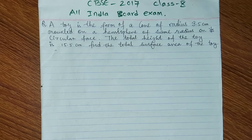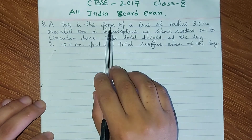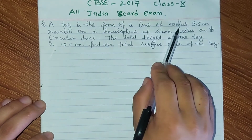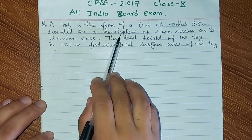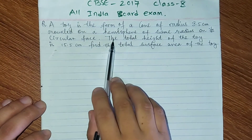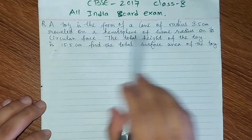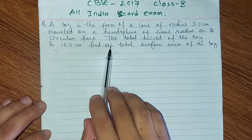This problem is from CBSE 2017 All India Board Exam, Class 10 Mathematics. This question is very important. A toy is in the form of a cone of radius 3.5 cm mounted on a hemisphere of the same radius on its circular face. The total height of the toy is 15.5 cm. Find the total surface area of the toy.